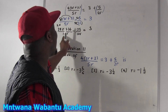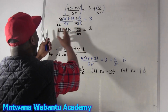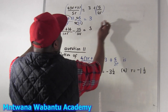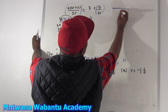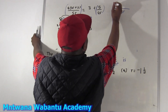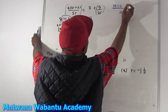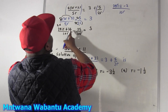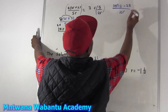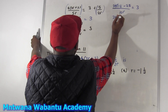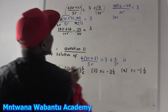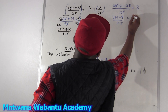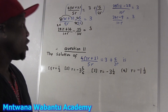Since the denominator is the same, we write only one denominator. So over 10a: take the first numerator minus the second. So 24a plus 16 minus 25, equal to 3. That simplifies: 24a and then 16 minus 25 gives negative 9, all over 10a, equal to 3.